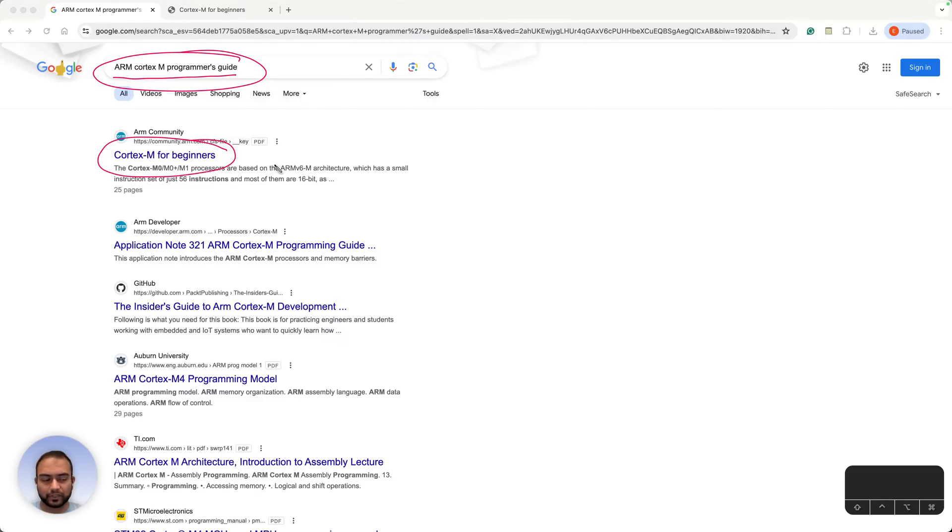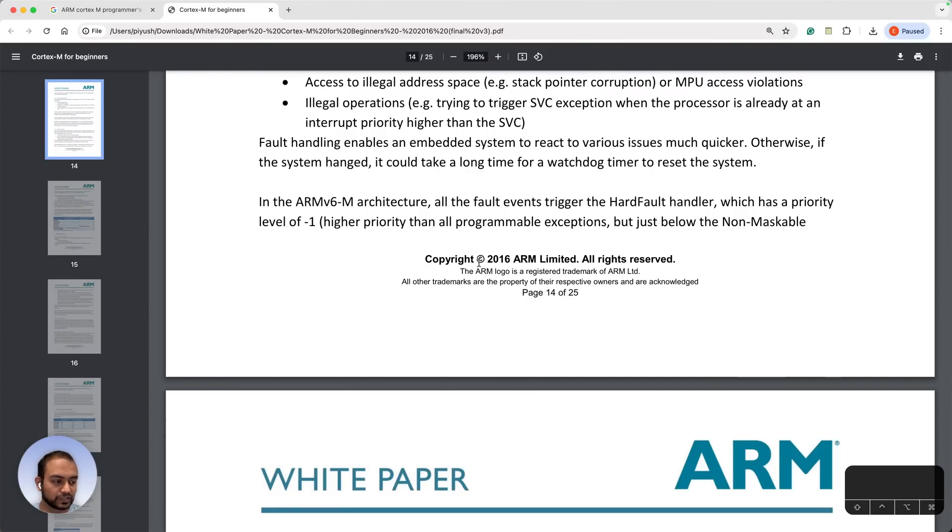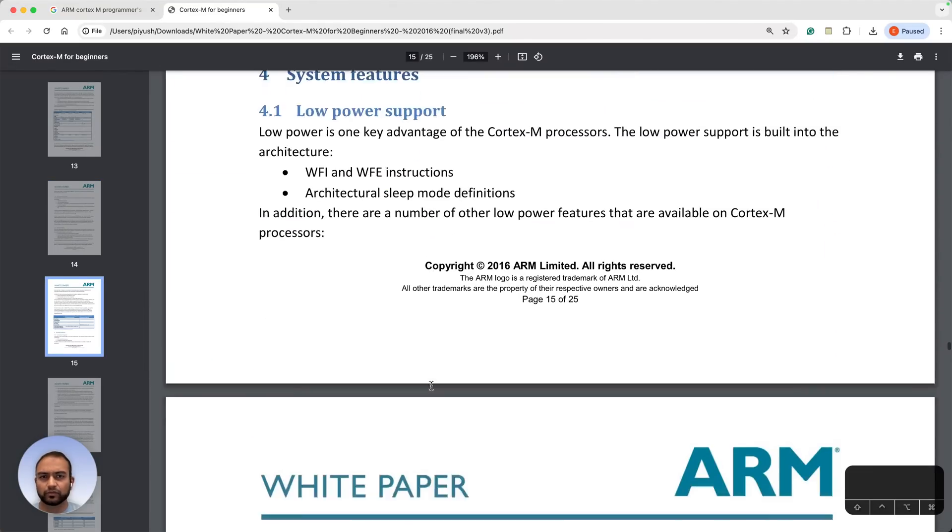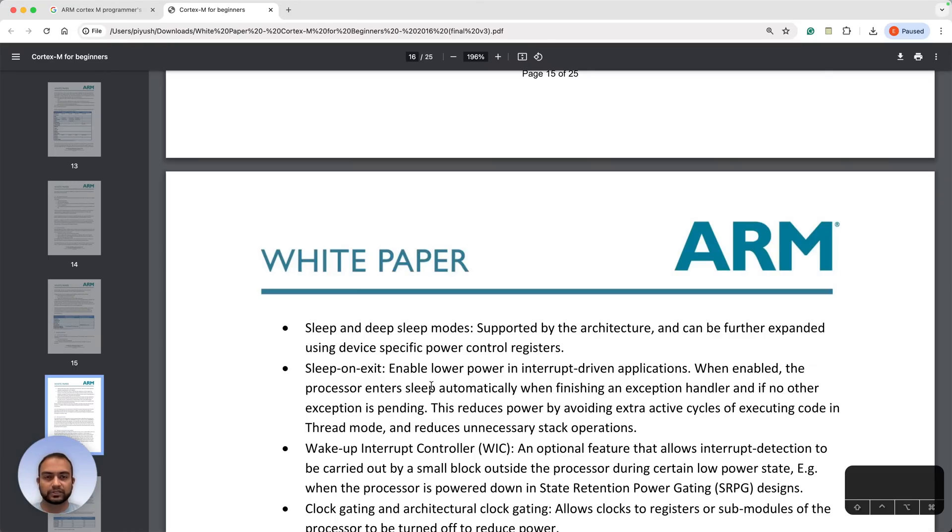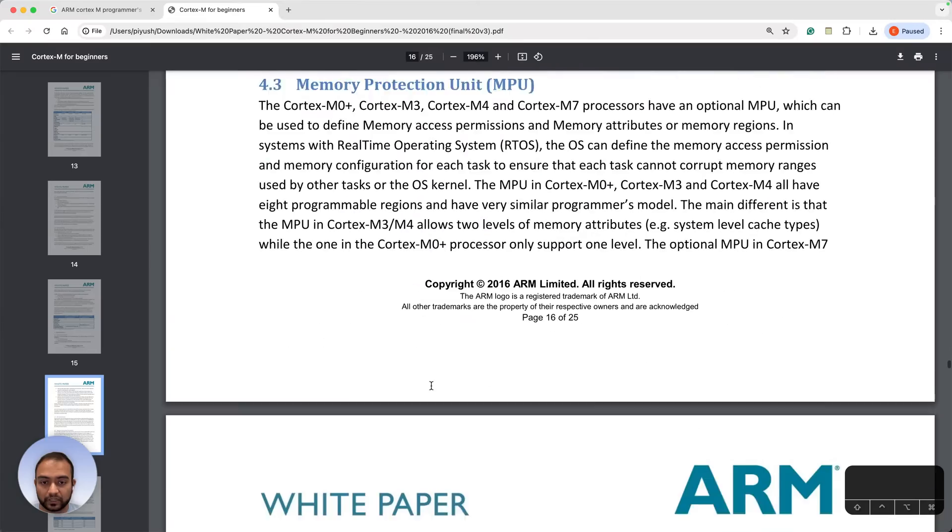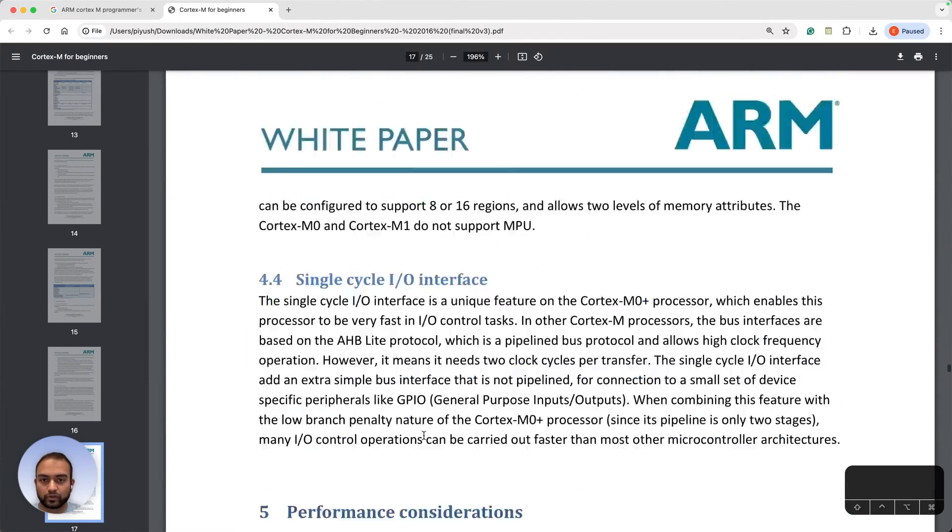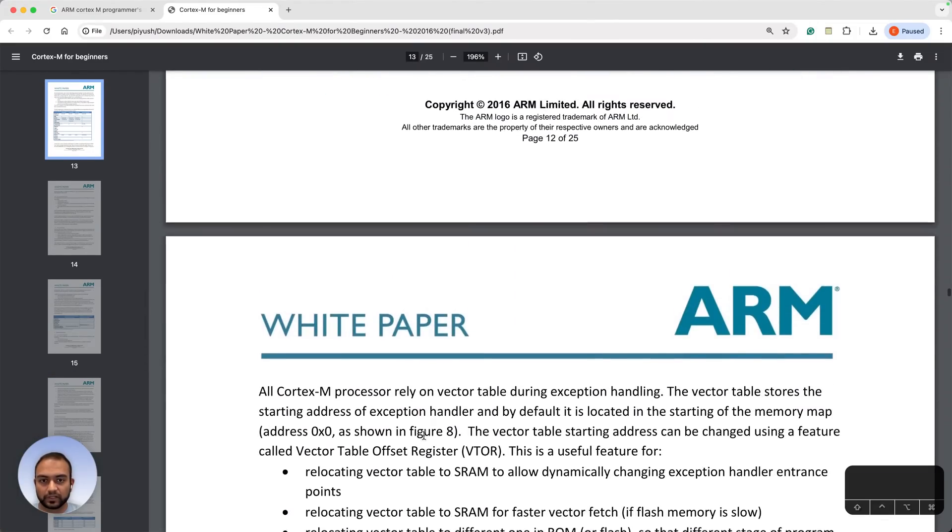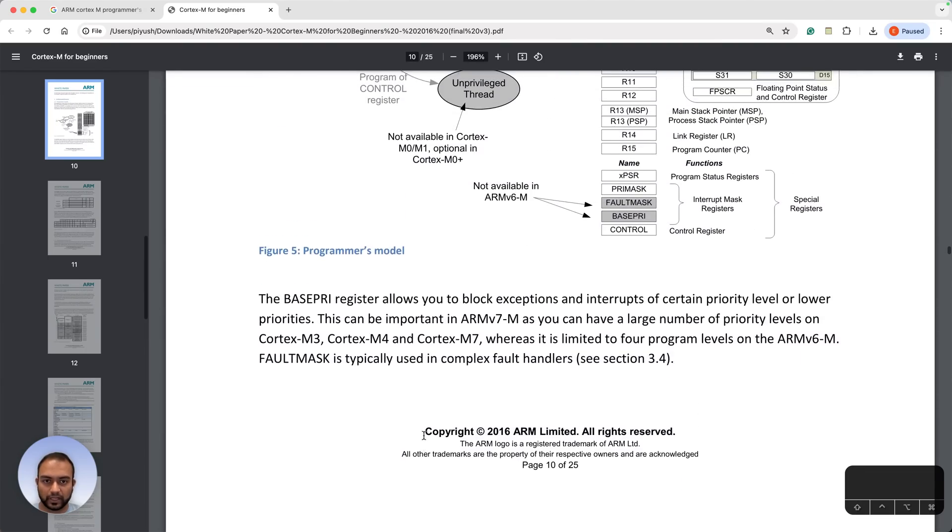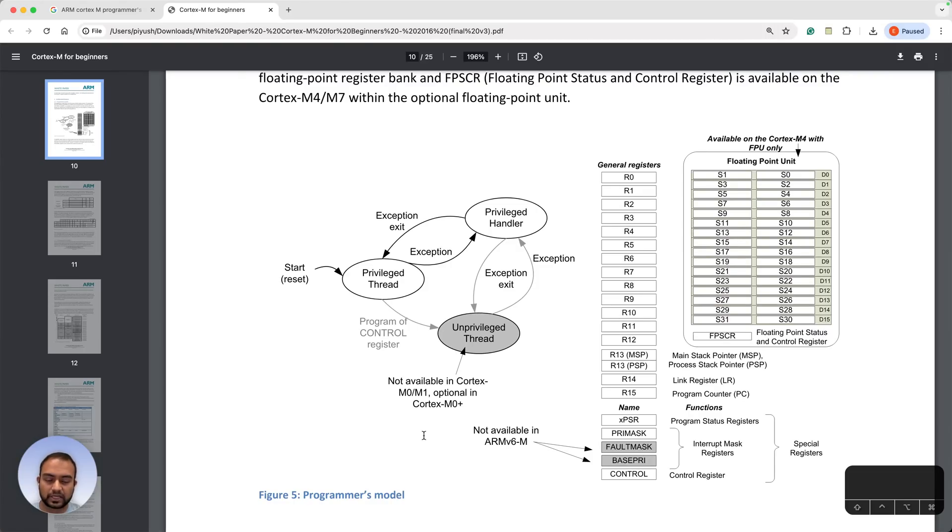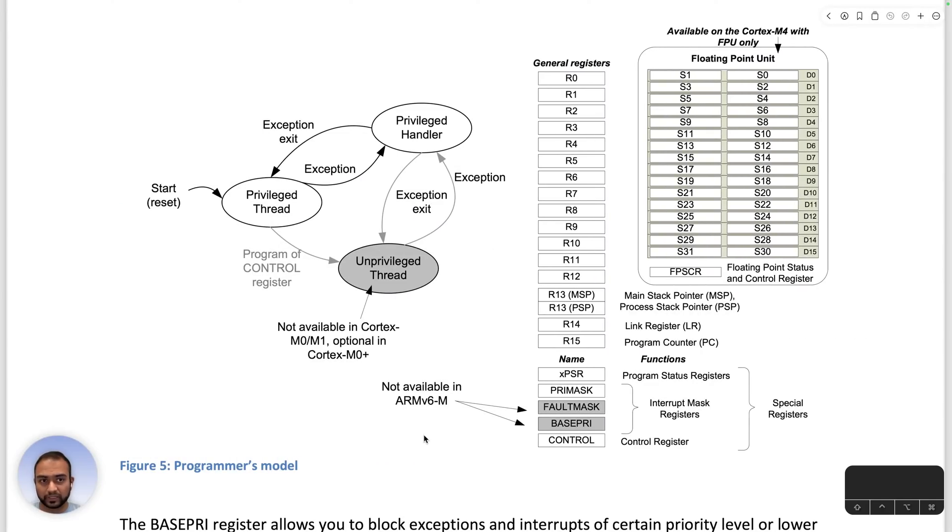The link for the document will be in the description of this video. Once we visit this document, you should see something of this nature. It's a 25 page document and it guides through what the M class CPU is, different parts of it. You can take a read, but what we are going to do is focus on page number 10, which talks specifically about the programmer's model. I've downloaded this PDF and opened it in full screen mode so I can scribble on it.